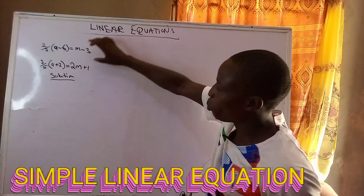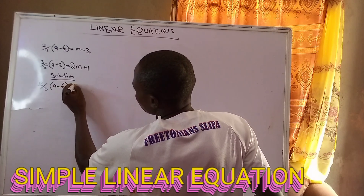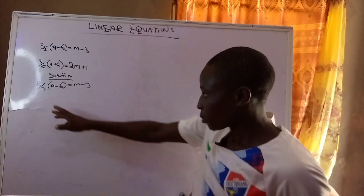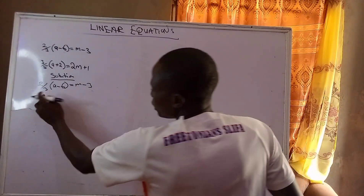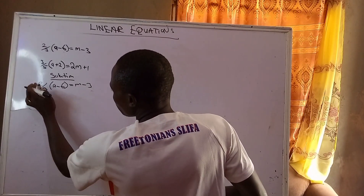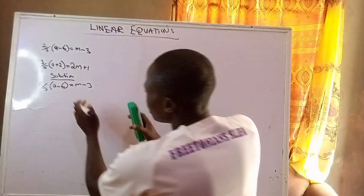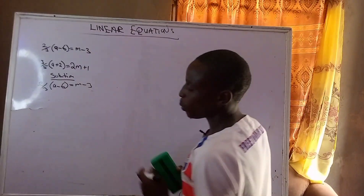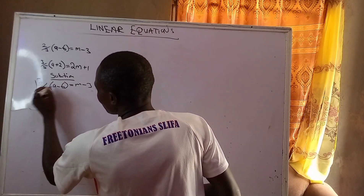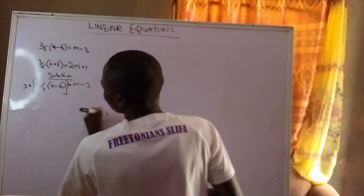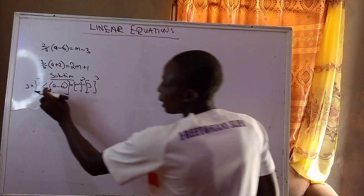The first thing is to pick this particular equation: 2 over 3, open bracket, a minus 6, close bracket, equals m minus 3. I need to multiply everything by 3 so as to clear this fraction. Multiplying everything by 3 means 2 over 3 times open bracket a minus 6 close bracket, then m multiplied by 3, and 3 multiplied by 3. The 3 in the denominator will cancel.